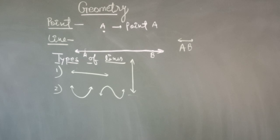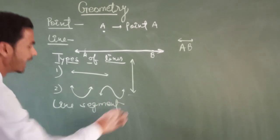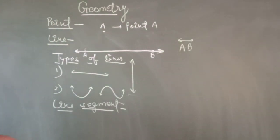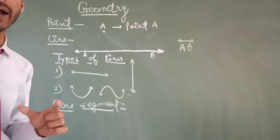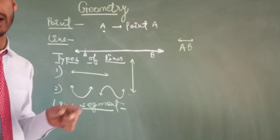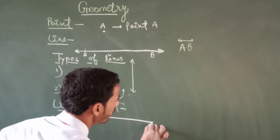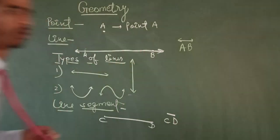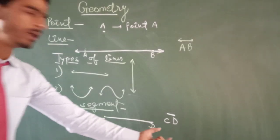Now, what is a line segment? A line segment is a part of a line that has two ends, and it is called a line segment. A line segment has a fixed length, so it can be measured. The names of the two endpoints are used to name it. Line segment CD is drawn and can be written as CD.